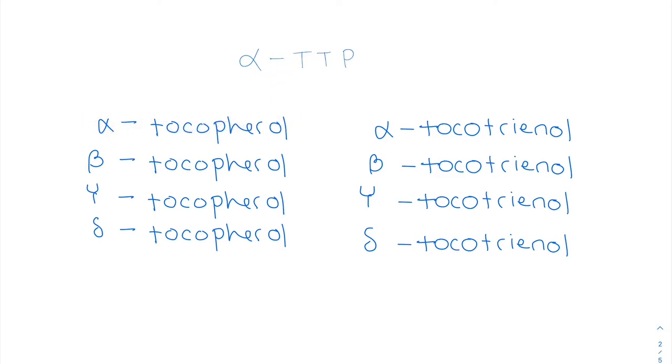It's able to get uptake, or used by this alpha-TTP, but then it's not leaving our bodies as easily as these others. So that is why alpha-tocopherol is the primary or predominantly bioactive vitamin.